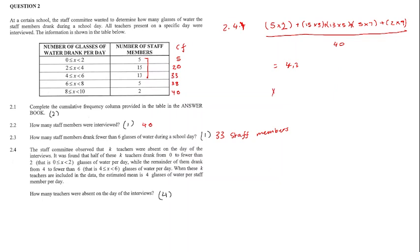So our old mean is equal to 4.2 glasses of water. So to get our difference, we can take our old mean minus our new mean, which is 4.2 minus 4, and we get 0.2. Then to get the amount of teachers, we take 0.2 times by 40, which is the total staff, and we get 8. So 8 teachers were absent.